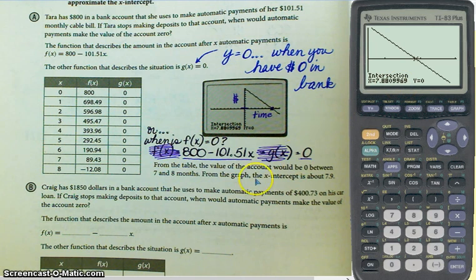Down here, they rounded it off just a little bit and they called it 7.9, which is fine. I could have found the 7.88 by solving this equation for X, 800 minus 101.51X equals zero. So solving for X would have given me the same thing here. Which is the amount of time it takes for the balance in her account to be zero.